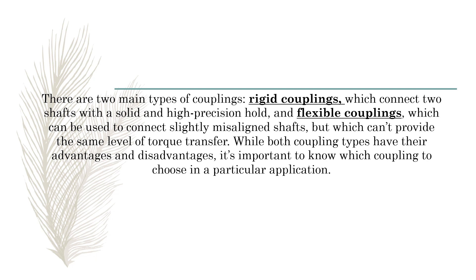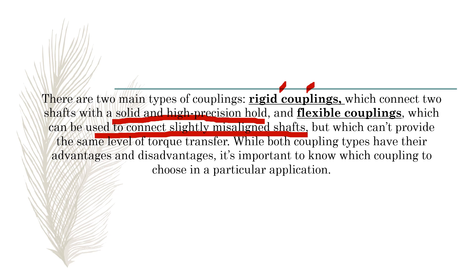There are two types of couplings: rigid coupling, which connects two shafts with a solid and high-precision hold, and flexible coupling, which can be used to connect slightly misaligned shafts. If you use a flange coupling and there is misalignment, the flange will not fit — you need a rigid coupling only when alignment is within tolerance. With flexible coupling, slight misalignment is acceptable, but it cannot provide the same level of torque transfer because there will be some loss of energy.